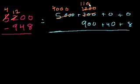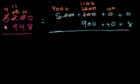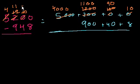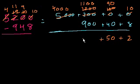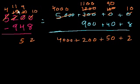Now let's borrow 100 from the 1,200 — so we have 1,100 left — and put that 100 in the tens place, so it becomes 10 tens. That 100 is the same thing as 10 tens. Then let's borrow 10 from this 100 — so it becomes 90 — and put the 10 in the ones place, so that becomes 10. In place notation: take 10 from there, so it's 9 tens. Now we are ready to subtract: 10 minus 8 is 2; 90 minus 40 is 50; 1,100 minus 900 is 200; and then 4,000. In place notation: 10 minus 8 is 2; 9 minus 4 is 5; 11 minus 9 is 2; 4 minus nothing is 4. The answer is 4,252.